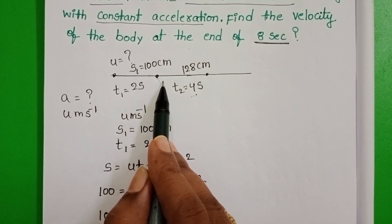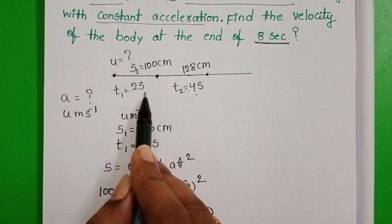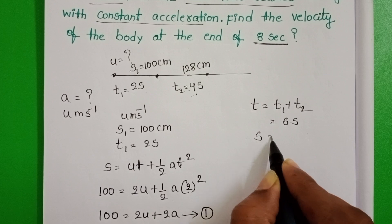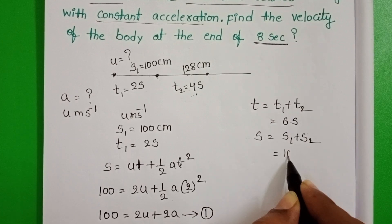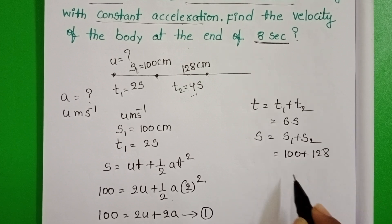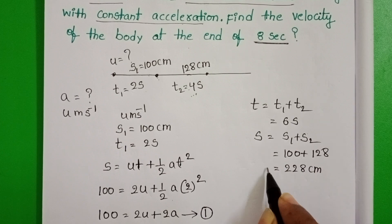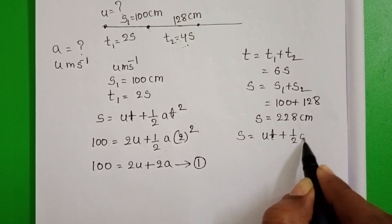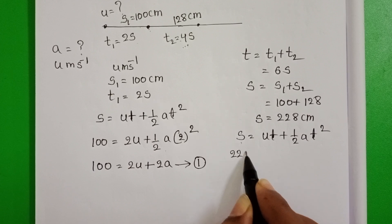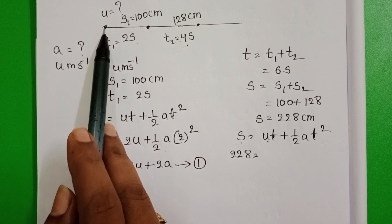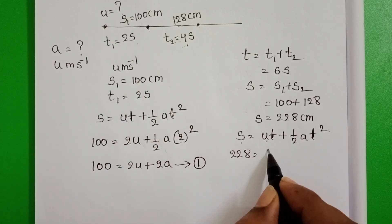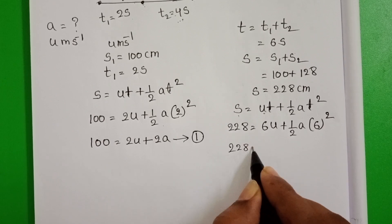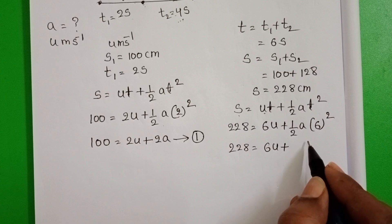At the end of 2 seconds, we don't know the velocity of the body, so take from the starting point again. Total time is T1 + T2 = 2 + 4 = 6 seconds. Total distance covered in 6 seconds is 100 + 128 = 228 cm. Using S = UT + ½AT²: 228 = 6U + ½ × A × 6² = 6U + 18A. Take this as Equation 2.